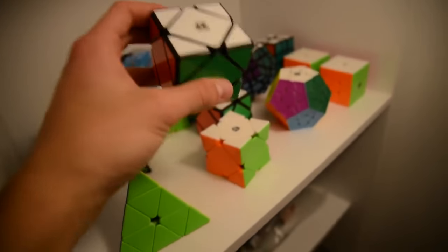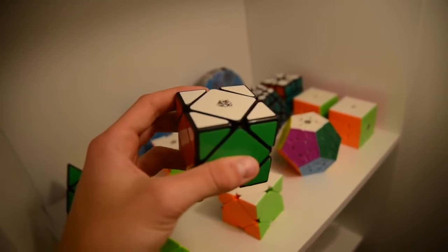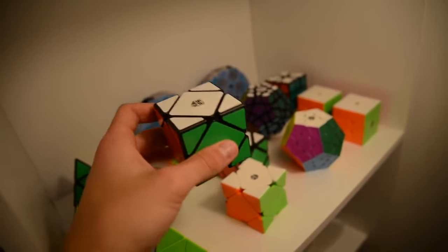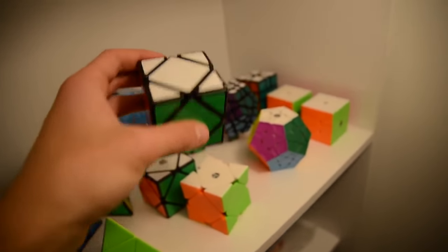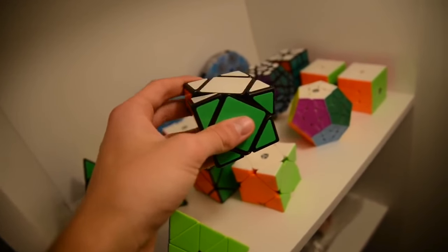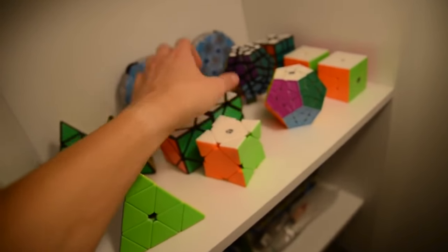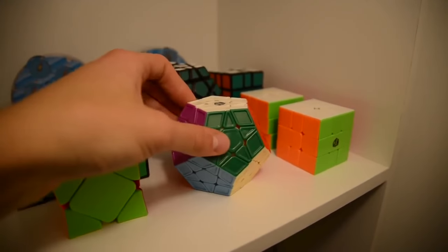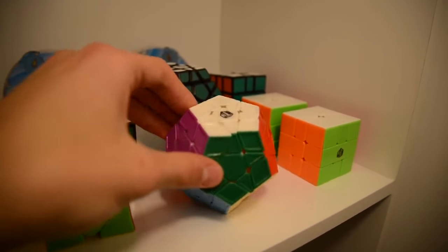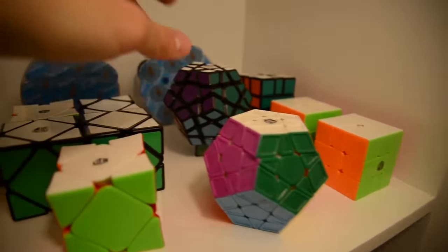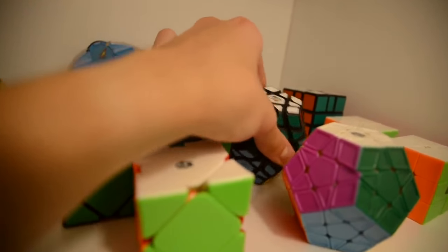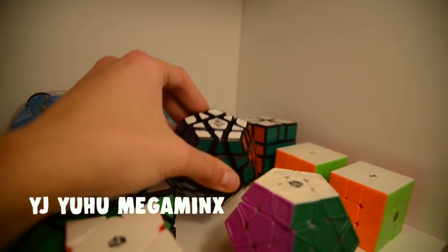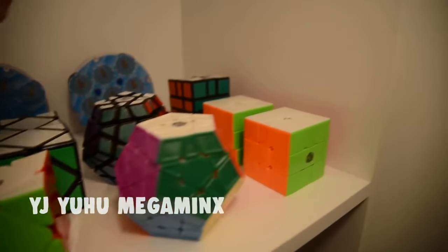Here we have the Chi Skewb. And this is the Moyu Ball Bearing Skewb. A nice one as well. Now here we have the Galaxy Megaminx concave version. And back here we have another Moyu Megaminx.